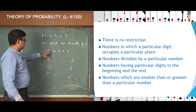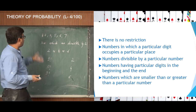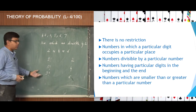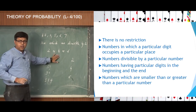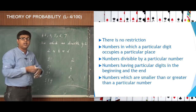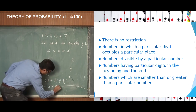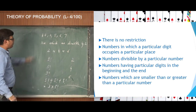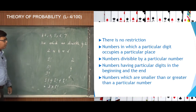Now it is an OR case: the number ends with 2 or 4 or 6. So the OR rule — the addition rule — applies. The total number of numbers divisible by 2 is 5 factorial + 5 factorial + 5 factorial, which equals 3 × 5 factorial. That gives the answer for the third case — numbers divisible by a particular number, in this case divisible by 2. This is how we solve this type of restricted permutation.